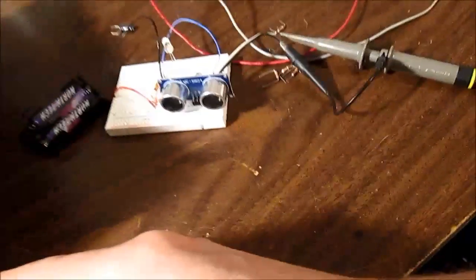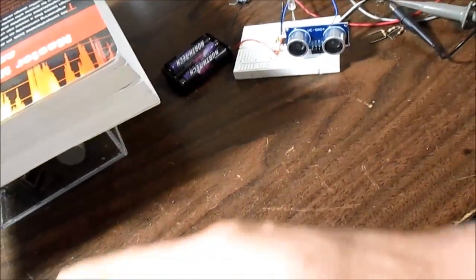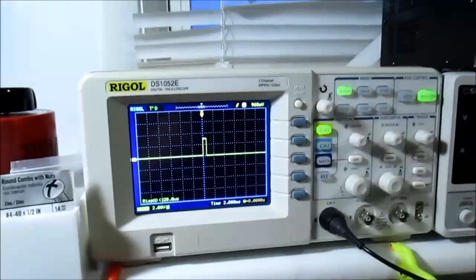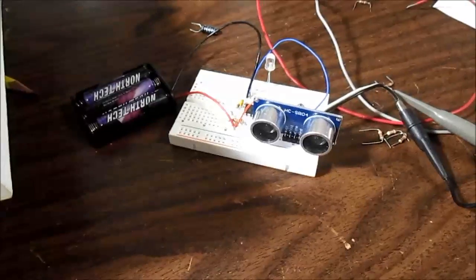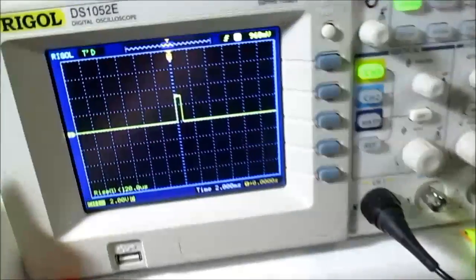So here's what I'm doing. I'm just putting my hand in front of it, taking it away, putting it back in front, moving it back and forth. And it's changing the pulse width. So now what I'm going to do is take a ruler and measure the distance and measure the pulse width and see how they correlate.